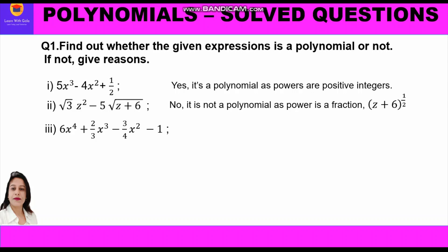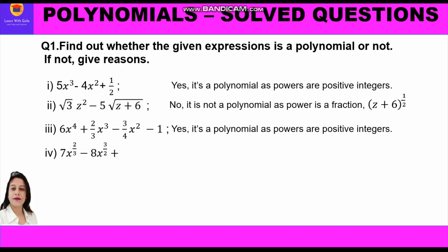Part 3: 6x⁴ + (2/3)x³ − (3/4)x² − 1. All the powers of x are positive integers — 4, 3, and 2 — so yes, it is a polynomial.